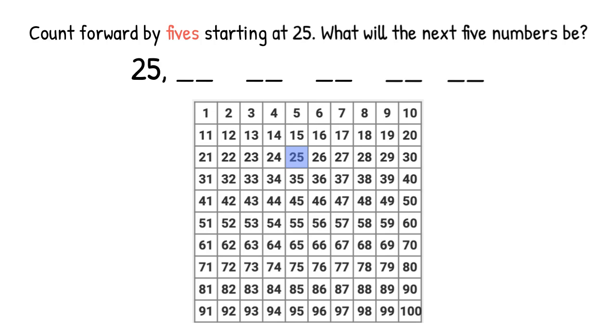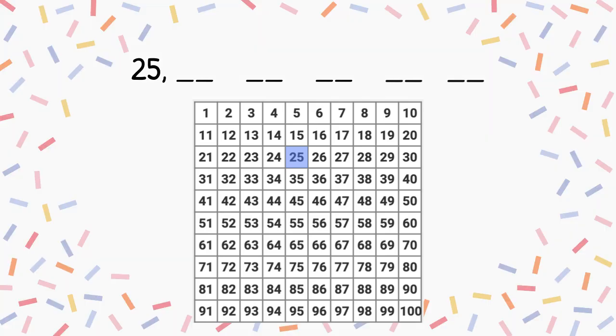Count forward by fives, starting at 25. What will the next five numbers be? If you said 30, 35, 40, 45, 50, you are correct. Great job!